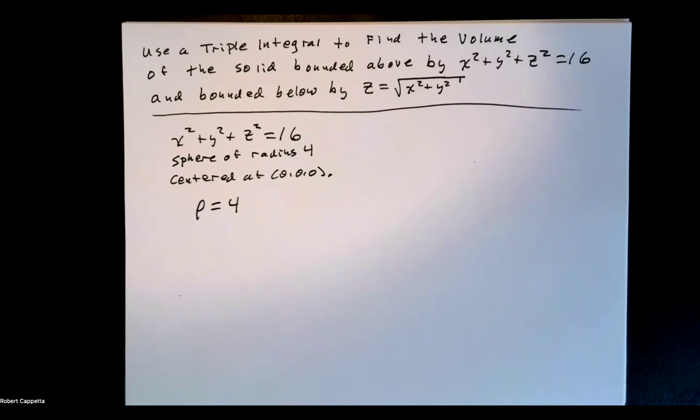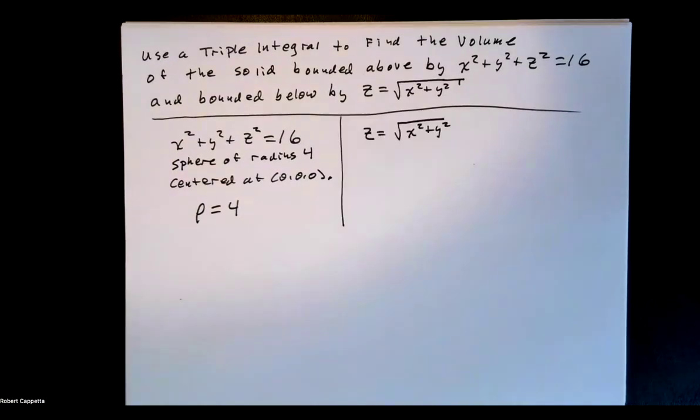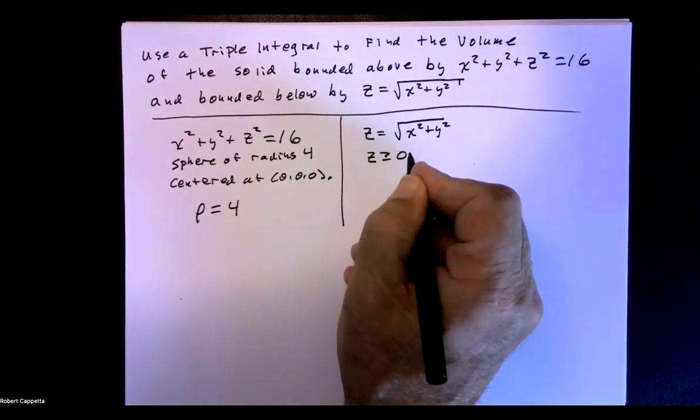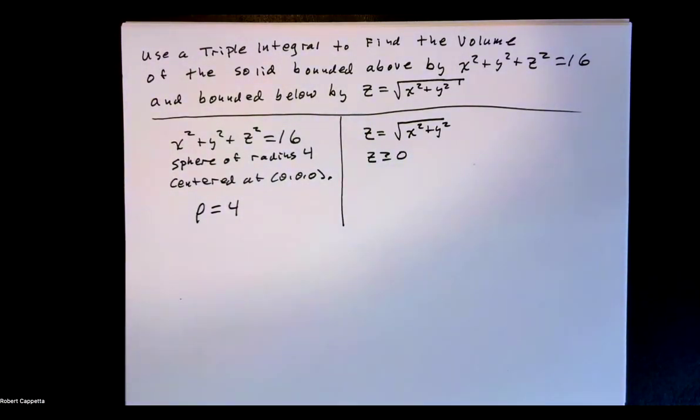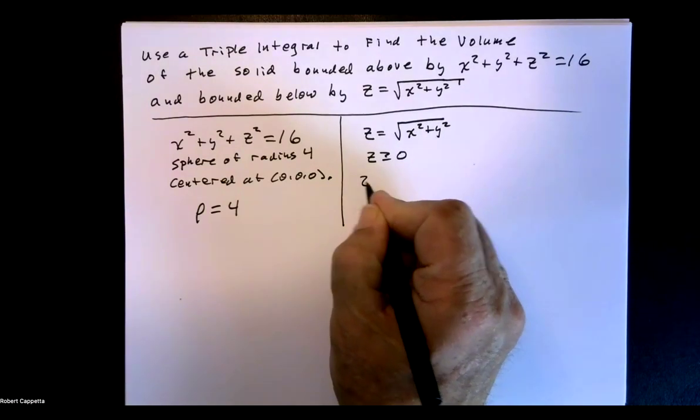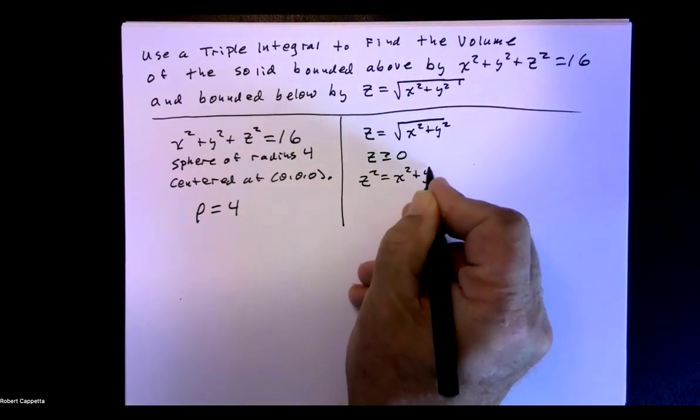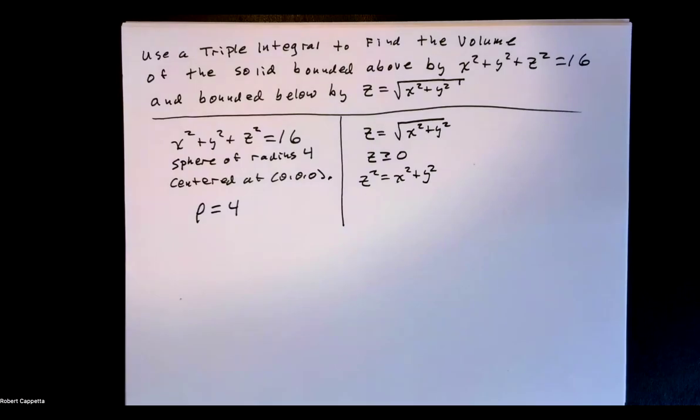Now, the next thing I have is z equals root x squared plus y squared. Let's do some analysis there. So let's notice right off the bat that z has to be greater than or equal to zero. We have no values below zero here. So the range of my function will only include values from zero and above. Let's go ahead and square both sides. And z squared equals x squared plus y squared. Does this enable you to see the relationship?